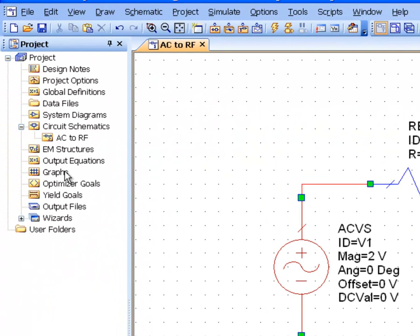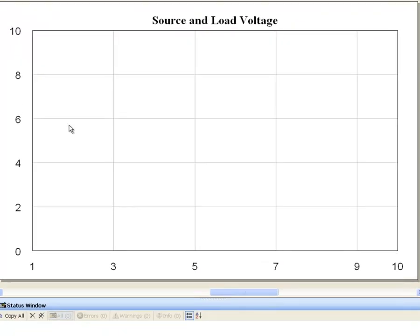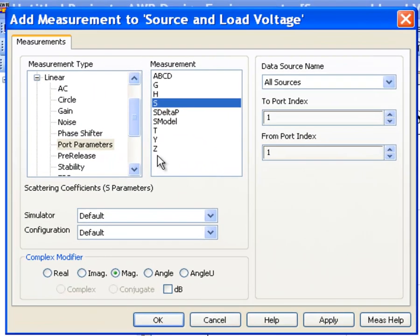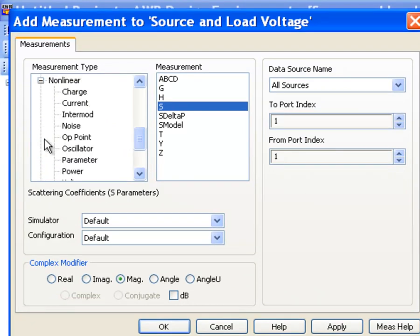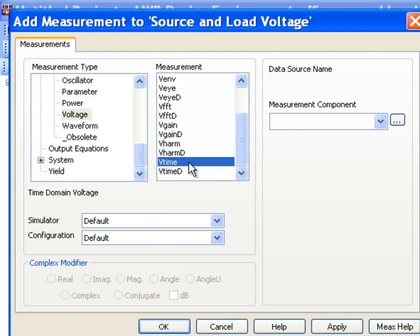Now we can get ourselves onto graphs. Right click on graph, open a new one. We can call it source and load voltage, subretangular graph, and then we right click, add a new measurement. In this case we'll have to go into the non-linear measurements, pick the voltage, and we want to see a time waveform of our voltage so we'll choose a measurement element called Vtime.